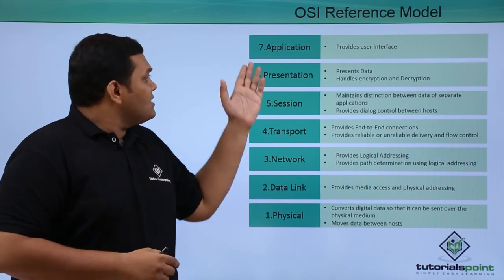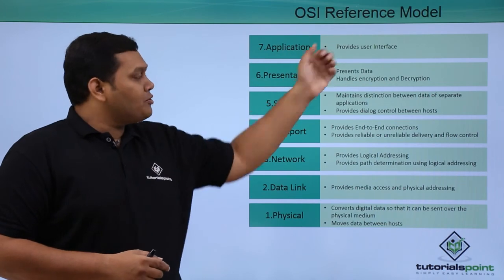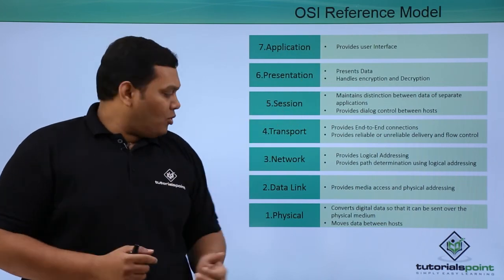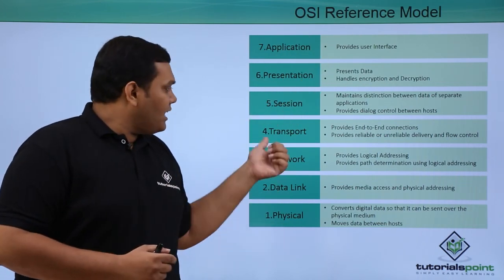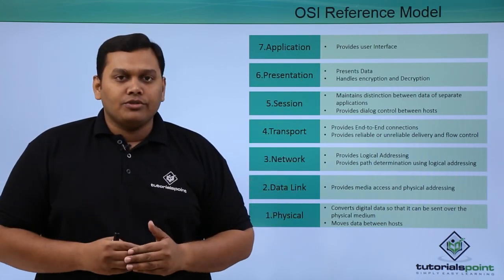These are the seven layers in the OSI reference model. We will be discussing each and every layer in the next videos. I'll see you in the next video.